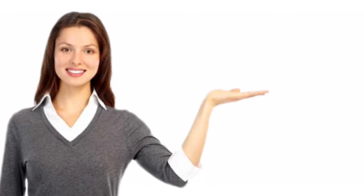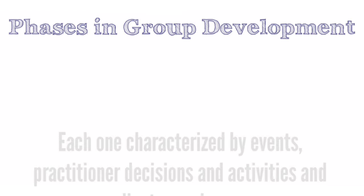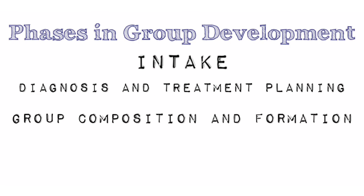To carry out the change, Vinter introduces a treatment sequence which he believes should be followed. This involves several major stages, each one characterized by events, practitioner decisions and activities, and client experiences which refer to phases in group development. The process involves: first, intake; followed by diagnosis and treatment planning; group composition and formation; group development and treatment; and lastly, evaluation and termination.